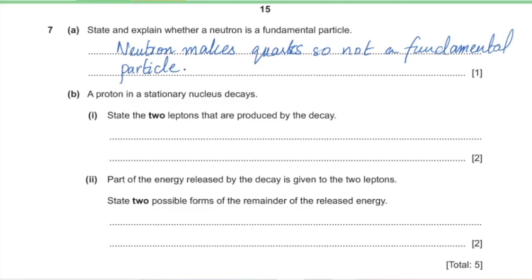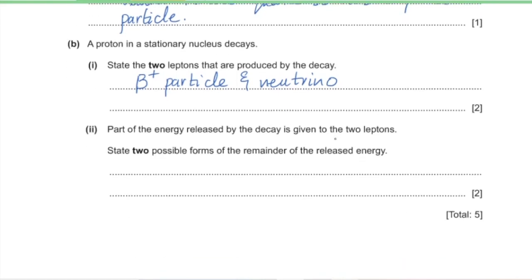Part B: a proton in a stationary nucleus decays. Part 1: state the two leptons produced by the decay. When a proton decays (beta-plus decay), it produces a neutron, a positron (beta-plus particle), and a neutrino. The two leptons produced are the positron and the neutrino. Part 2: state two possible forms of the remainder of the released energy. The remaining energy may appear as kinetic energy of the nucleus or as gamma radiation.